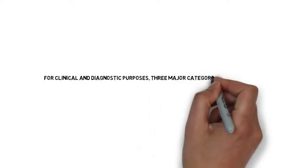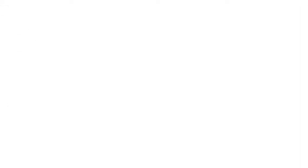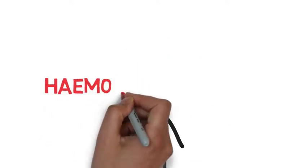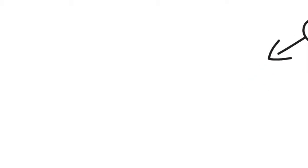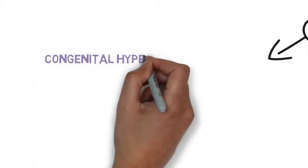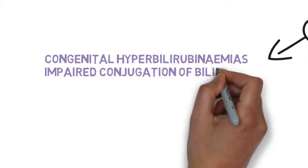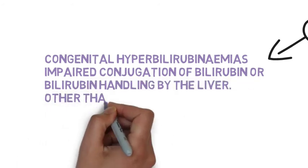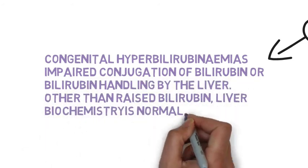For clinical and diagnostic purposes, three major categories of jaundice can be considered. First, hemolytic jaundice. Second, congenital hyperbilirubinemia — impaired conjugation of bilirubin or bilirubin handling by the liver. Other than raised bilirubin, liver biochemistry is normal.